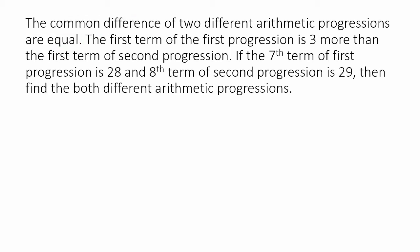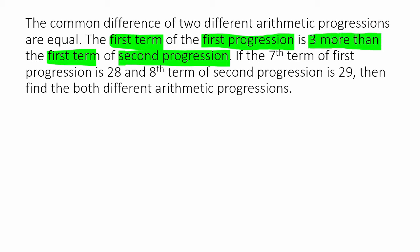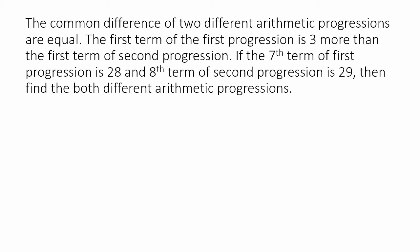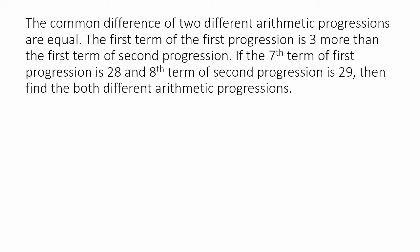There is a link between the two progressions. The first term of the second progression is 3 less than the first term of the first progression. They have also given that the seventh term of the first progression is 28, and the eighth term of the second progression is 29.